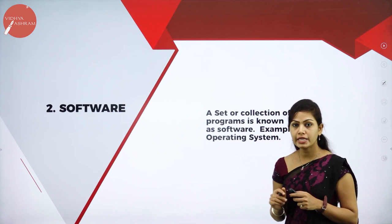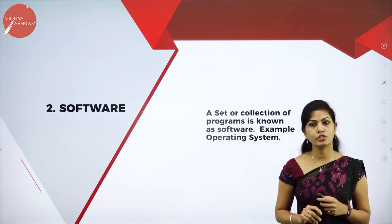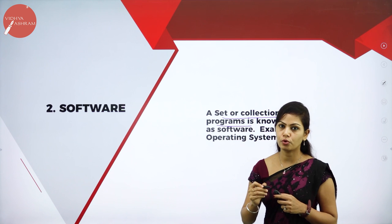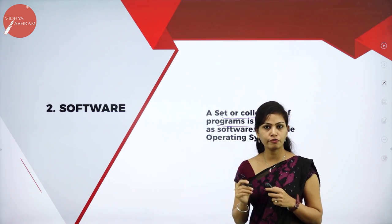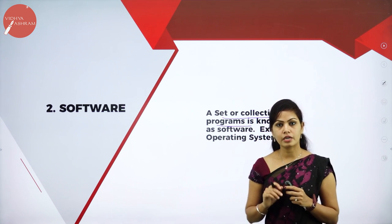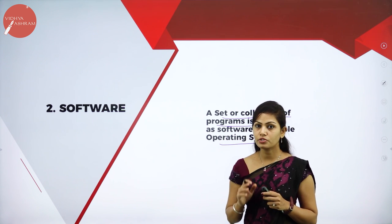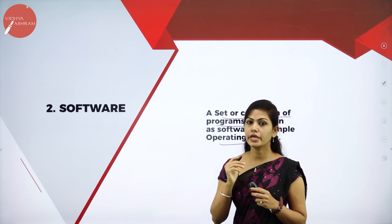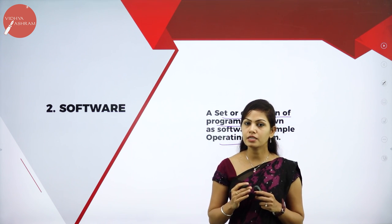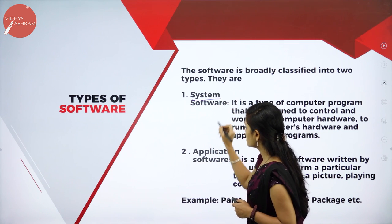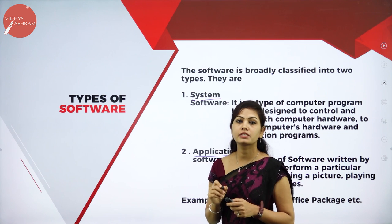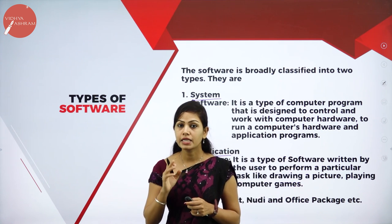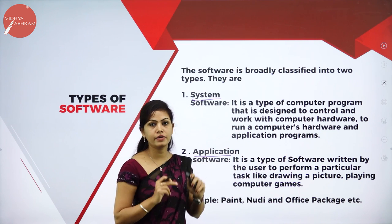Without software, a computer system would be useless. Software means a set of instructions or a collection of programs. There are mainly two types of software: system software and application software. System software is a type of computer program designed to control and work with computer hardware, used to control and manage hardware resources like memory and input/output units.